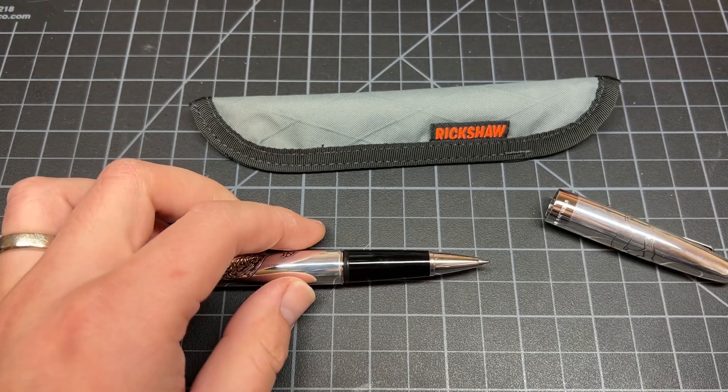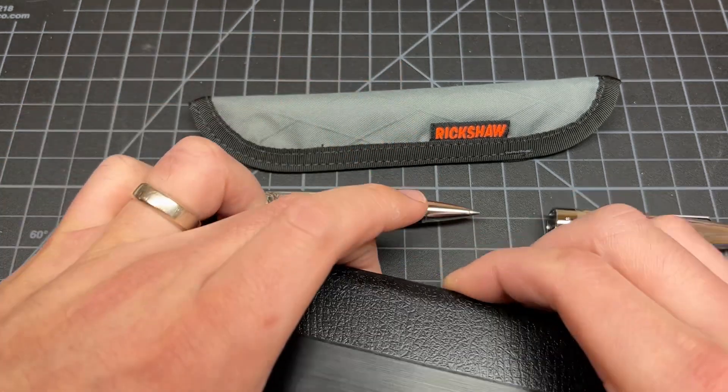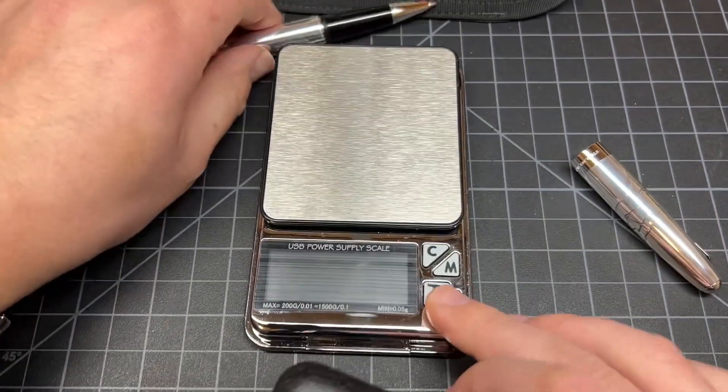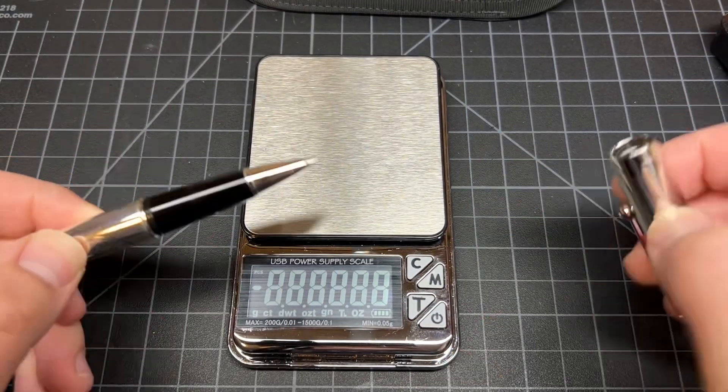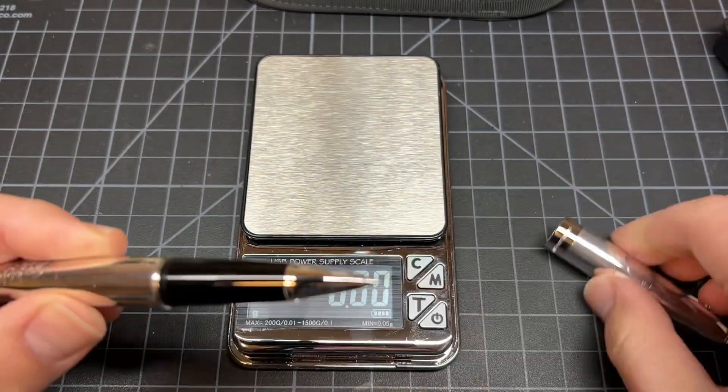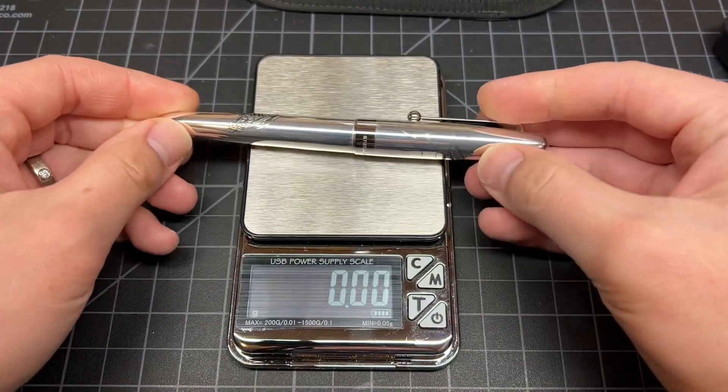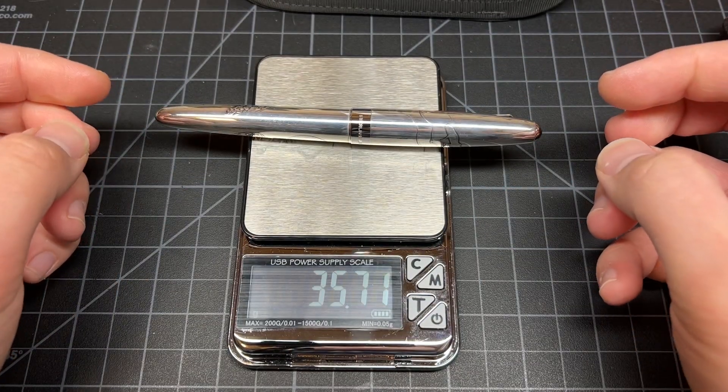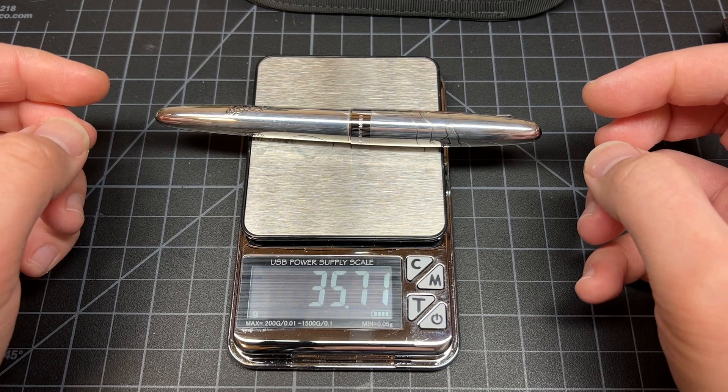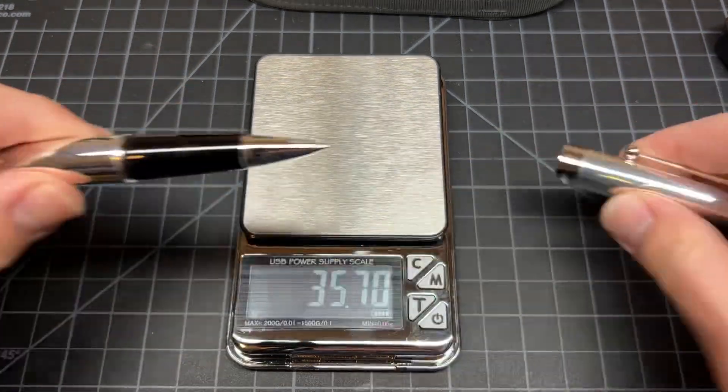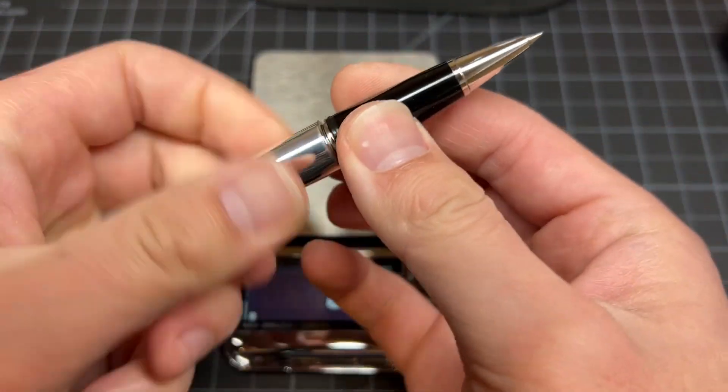Before we're going to do that, we're going to take the weight of this pen, since it is - I bumped the tripod - since it is sterling silver. Let's do it with the refill first. We got 35 grams. All right, now we're going to take out the refill.